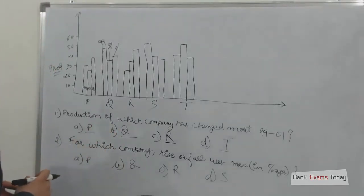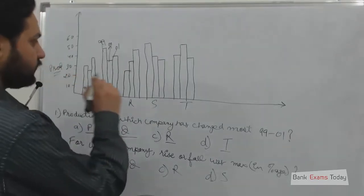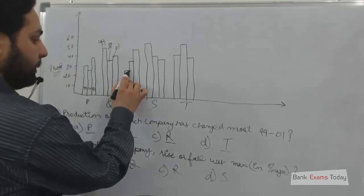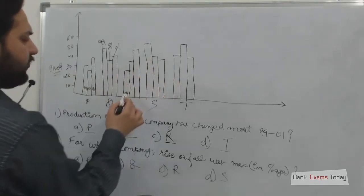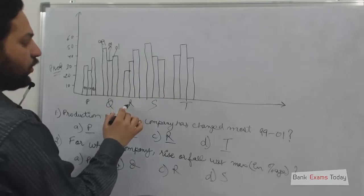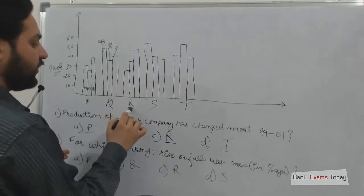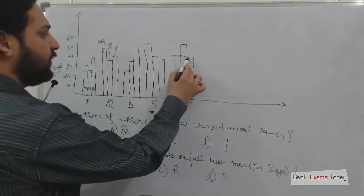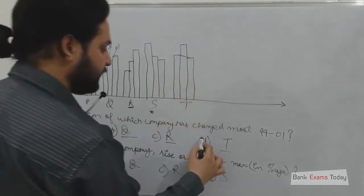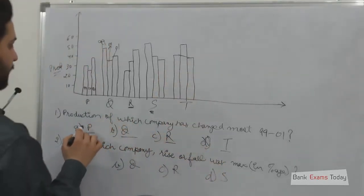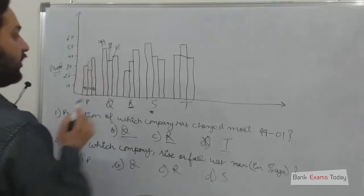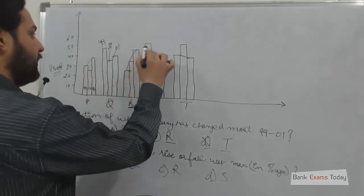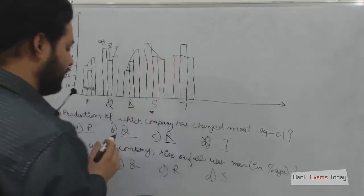Now simply you have to see that if you look, there are basically changes in two companies. The big changes are either in company R or company S. There is a smaller change in company T, so this one is rejected. And in company P there is also a small change, while in company R and company S there is a similar change.